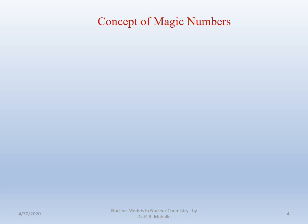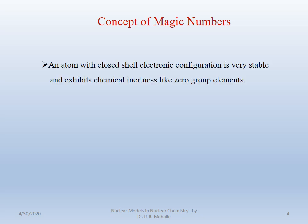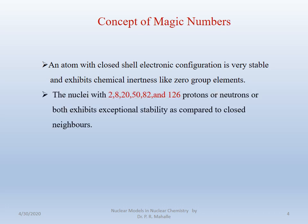We will move to the concept of the magic numbers. An atom which has a closed shell electronic configuration is very stable and exhibits chemical inertness, like zero group elements. Thus, the nuclei with 2, 8, 20, 50, 82, and 126 protons or neutrons or both exhibit exceptional stability as compared to their close neighbors. These numbers are called the magic numbers.